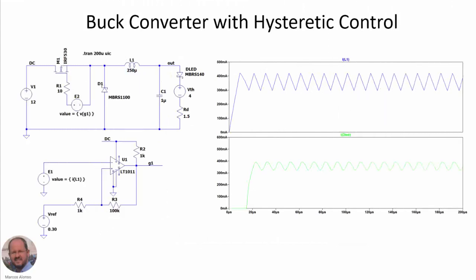Here is an example of a buck converter operating with hysteretic control. We measure the current through the inductor using a voltage source generating a proportional voltage, then implement a hysteretic comparator with a minimum of 300 mA, a maximum of 400 mA, and an average value of 350 mA — which is the desired LED current. The current through the LED shows an average value of 350 mA, with a ripple slightly lower than in the inductor due to the filtering effect of the output capacitor.